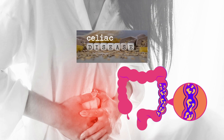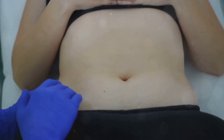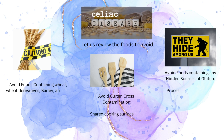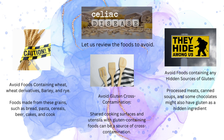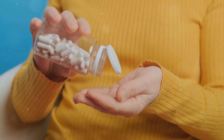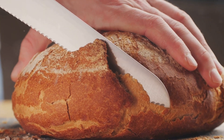Let us now move to celiac disease, an autoimmune disorder where gluten triggers damage to the small intestine. It is a serious condition that demands careful management. Foods to avoid include: 1. Foods containing wheat, wheat derivatives, barley, and rye, such as bread, pasta, cereals, beer, cakes, and cookies. 2. Foods containing hidden sources of gluten, such as processed meats, canned soups, and some chocolates. Some medications and vitamin supplements also use gluten as a binding agent. 3. Avoid gluten cross-contamination by not sharing cooking utensils.